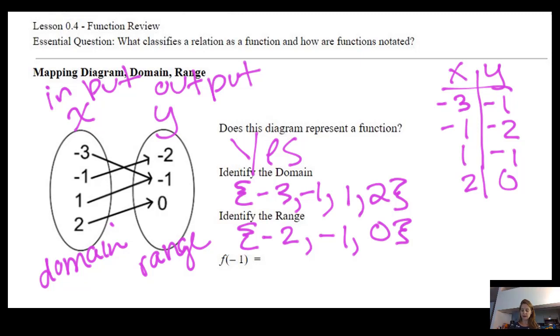Finally, we have function notation where f of negative one, so negative one is the input. So when negative one is the input, what is the output? And the output is negative two. Here is when negative one is the input, and the output is negative two. We wrote it as a table, negative one to negative two. The answer here is negative two.